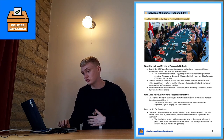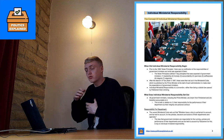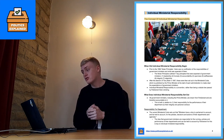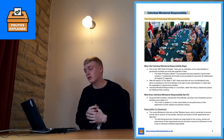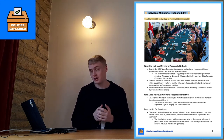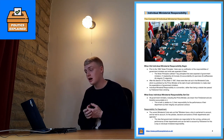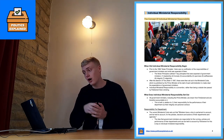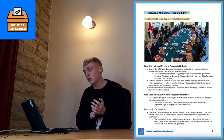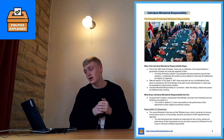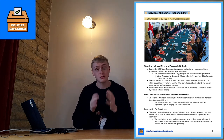Looking now at individual ministerial responsibility and when it began. Prior to the 1994 Nolan principles, there was no real codification of the responsibilities of government ministers. The Nolan principles outlined seven key principles expected of ministers: leadership, honesty, accountability, openness, selflessness, integrity, and objectivity. A few years later, after Tony Blair won the 1997 election, these were set out in the ministerial code, published by the prime minister at the start of each administration. This is where both individual and collective ministerial responsibility are set out.